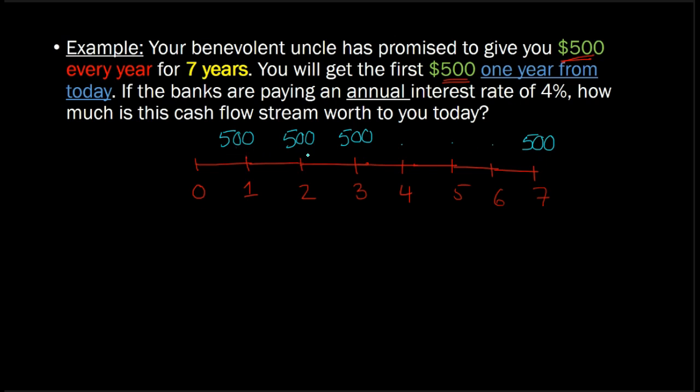Second, these cash flow streams must be occurring at regular intervals. In this case, the intervals are every year. So you're getting one $500 in this year, then another year from now, then another year from now. So these are regular intervals.